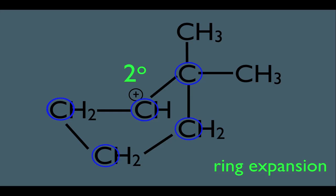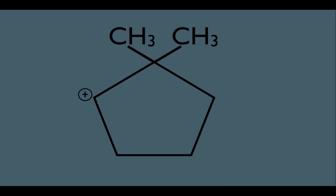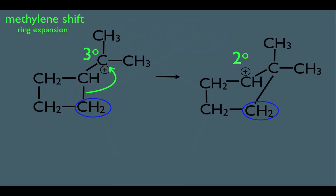Remember the overall trend: rearrangement will happen if it leads to a more stable intermediate. In this case, a five-membered ring with a secondary carbocation is more stable than a four-membered ring with a tertiary carbocation. Now let's finish this off. If you're on an orgo test and you have a ring expansion, you have to clean this picture up. Your molecule is a five-membered ring with two methyls connected to one carbon in the ring, and next door to that carbon is the carbocation. Cleaning it up, you'd have a five-membered ring with two methyls on one carbon and a carbocation on the adjacent carbon. That's our methylene shift.